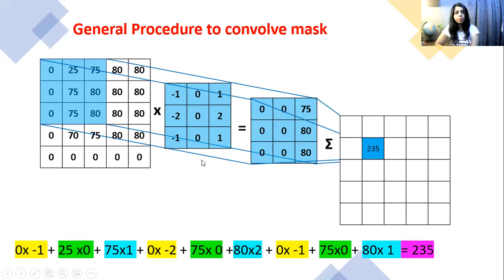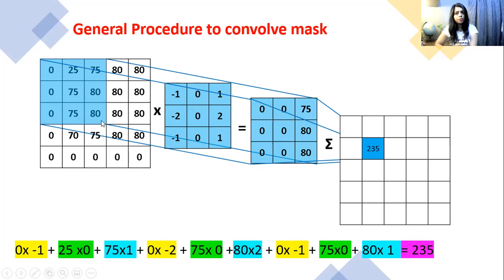We calculate the sum of products. That means we take 0 times minus 1, then add 25 times 0, plus 75 times 1, plus 0 times minus 2, plus 75 times 0, plus 80 times 2, plus 0 times minus 1, plus 75 times 0, plus 80 times 1. We overlay the mask and calculate the sum of products.